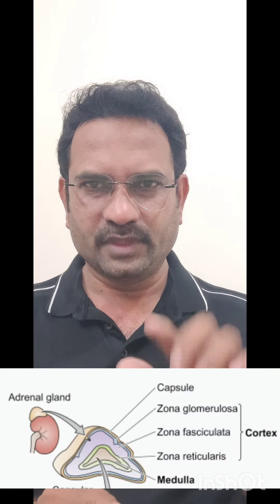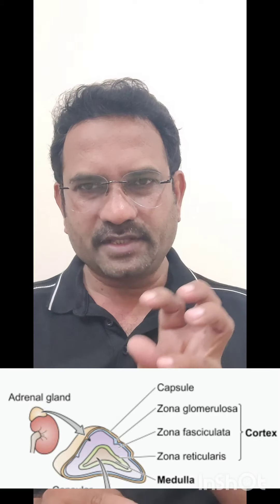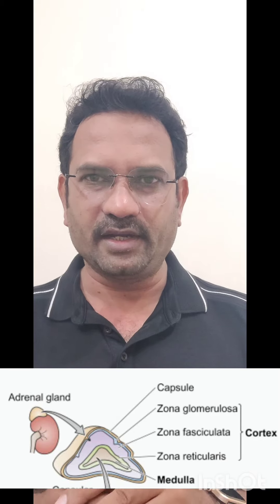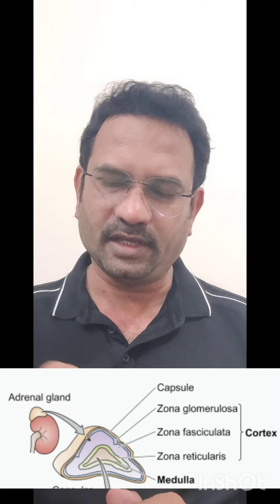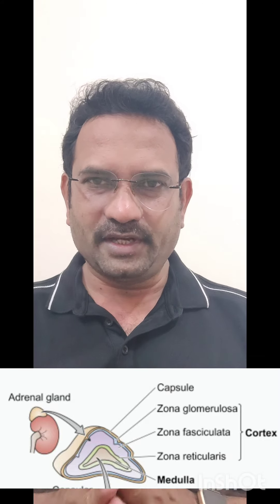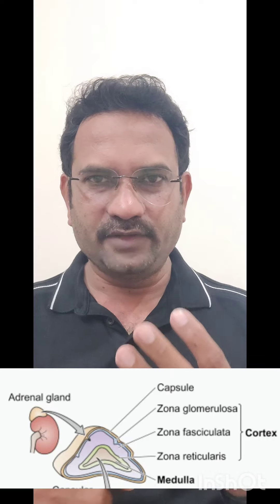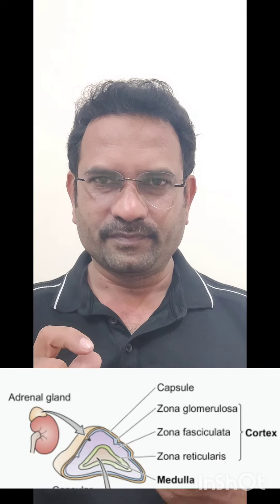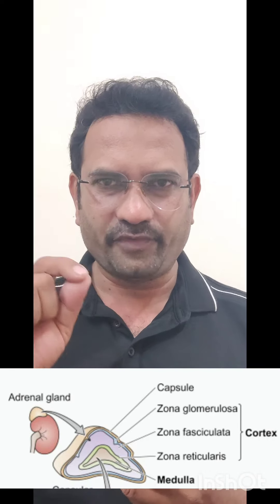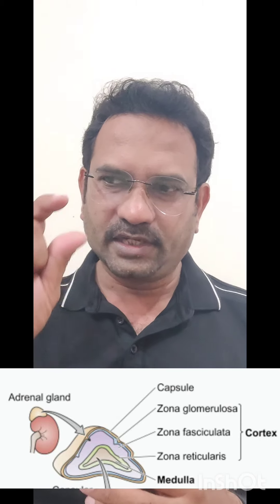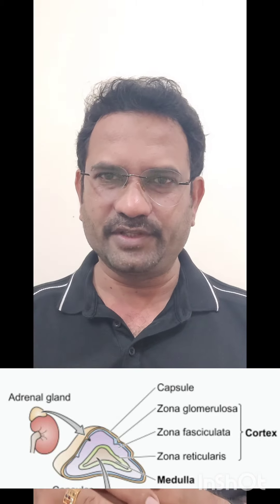The adrenal gland sits on top of the kidney. Its anatomy consists of an outer capsule, beneath which is the cortex, and at the center is the medulla. The cortex is anatomically divided into three different zones: zona glomerulosa, zona fasciculata, and zona reticularis.